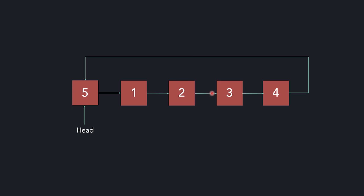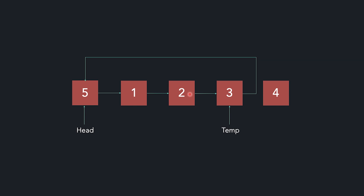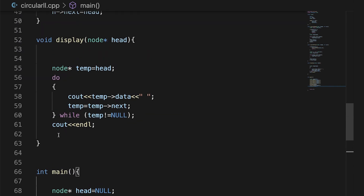Now let's see deletion in a circular linked list. Deletion is similar to what we do in a singly linked list. If I have to delete a node at the end, first I traverse to the node just before it. Then I set that node's next to head, effectively removing the last node. Before that, I keep track of the node to delete so I can free its memory.